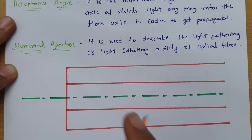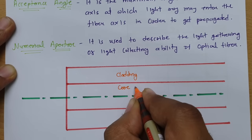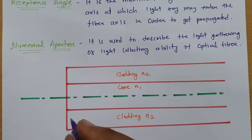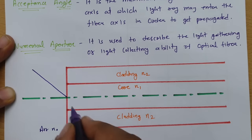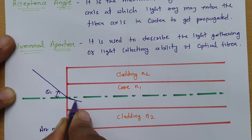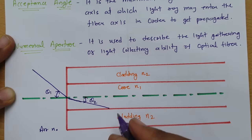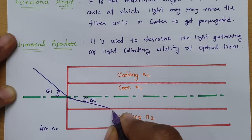Consider this fiber where this is the core and this is the cladding. The core has refractive index N1 and the cladding has refractive index N2. If I enter a ray inside the fiber from here — this is air having refractive index N0 — and this angle is theta1, then after refraction this angle will deviate to theta2. For long distance propagation of this light ray, we need total internal reflection inside the core.